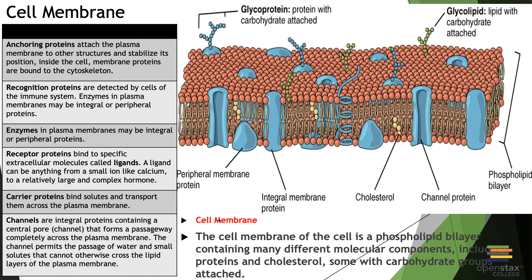Within the cell membrane there are several other features. There are anchoring proteins that attach to the plasma membrane to structure and stabilize its position. Recognition proteins allow the plasma membrane to sense and communicate with surrounding cells and respond to chemical changes in its environment. Enzymes are specialized proteins involved in chemical reactions. Receptor proteins help bind chemical changes in the outside environment. Carrier proteins help move things across the plasma membrane that would not normally freely move. Channels are specifically integral proteins that allow products to freely move across, making them less selective than carrier proteins.